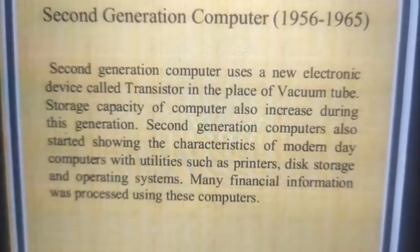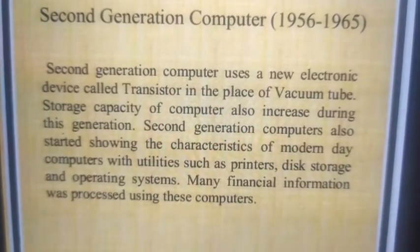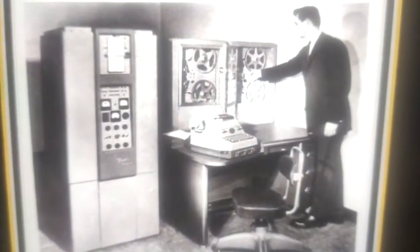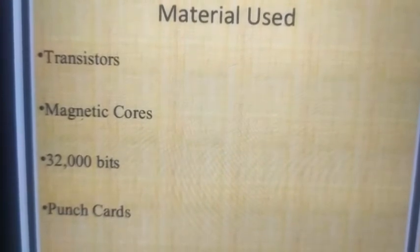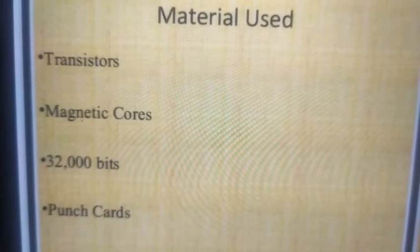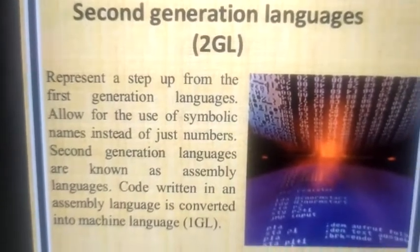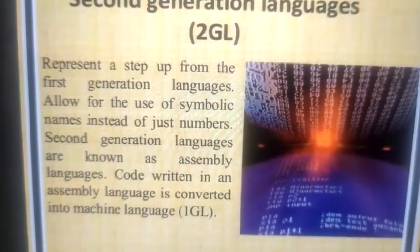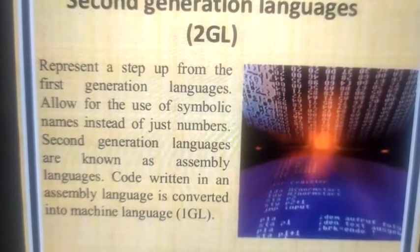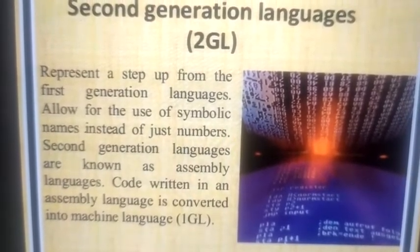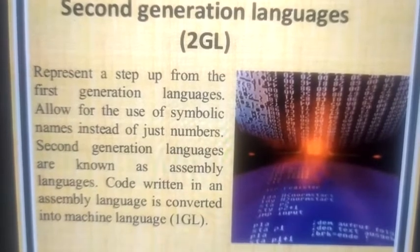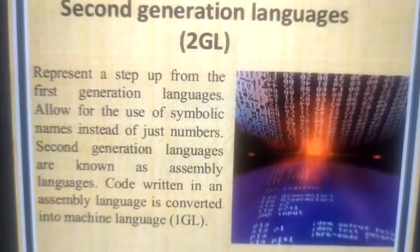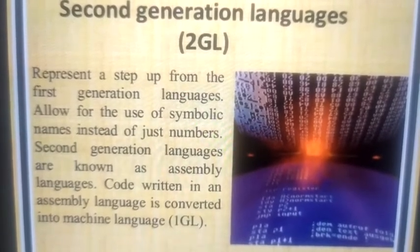Many financial information was processed using this computer. Look at the picture of the second generation type of computer. The materials used in the second generation are transistors, magnetic cores with 32,000 bits, and punch cards. The second generation used the first GL machine language, which represents a step up from the first generation. It allowed symbolic names instead of just numbers, which is known as assembly language. Code written in assembly language is converted into machine language.